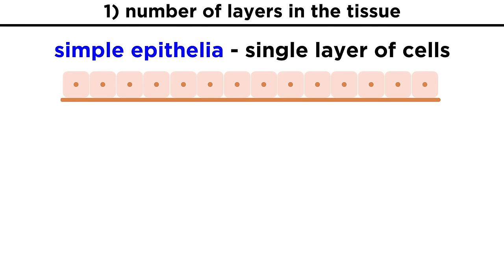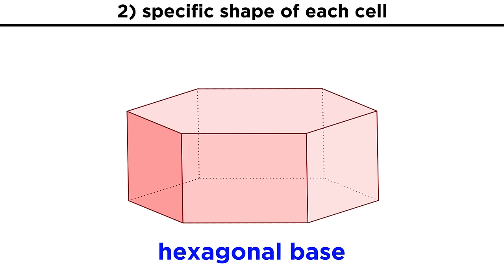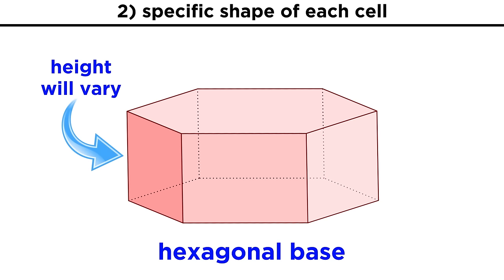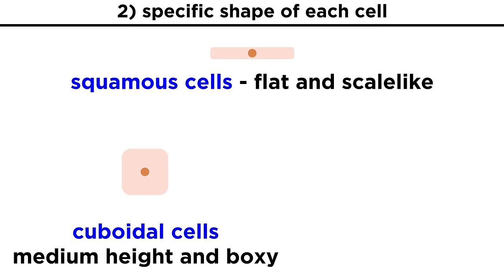First there can be simple epithelia, which means a single layer of cells, or there can be stratified epithelia, which means there are two or more layers of cells stacked on top of each other. In terms of shape, each cell typically has a hexagonal base, which allows for close packing, but the height of each cell can differ. Squamous cells are very flat, kind of like scales. Cuboidal cells are boxy, of medium height. And columnar cells are very tall, like columns.